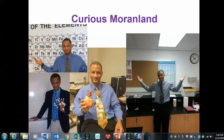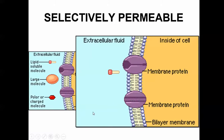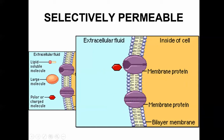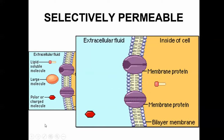Brought to you by Curious Moranland. Let's take a look at the next picture. See this molecule? It's going to pass through. This molecule can't get through this lipid bilayer, but it's going to get through the protein channel. And this one — it's not going to make it at all. So by the time we're done, we'll talk about all three of these. What we're talking about is the selectively permeable cell membrane and how things can get through.